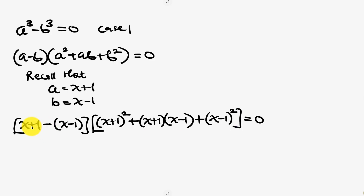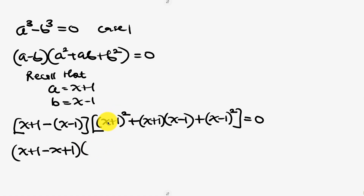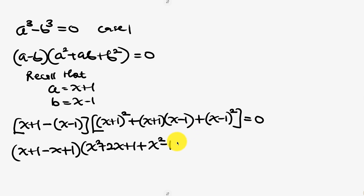Simplifying the first factor: x+1 minus x, and negative times negative gives positive 1, so we get 2. Now expanding (x+1)² gives x²+2x+1. The product (x+1)(x−1) is a difference of two squares, giving x²−1. And expanding (x−1)² gives x²−2x+1. So we have 2 times [x²+2x+1 + x²−1 + x²−2x+1] = 0.